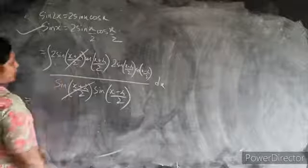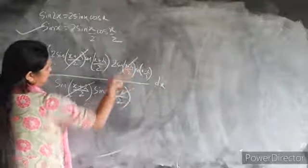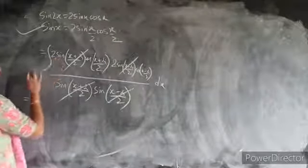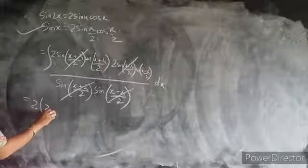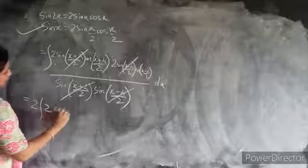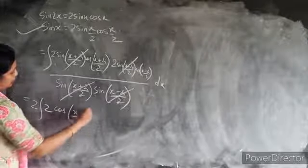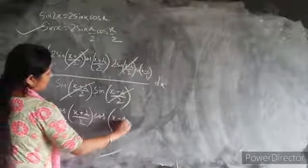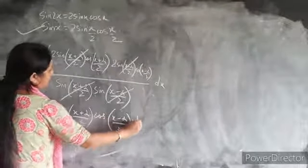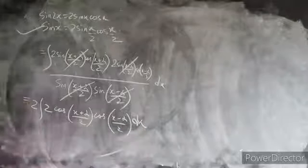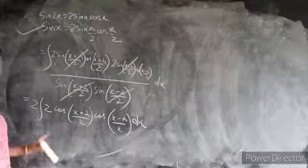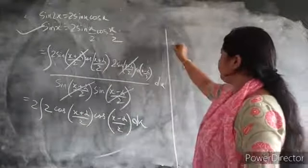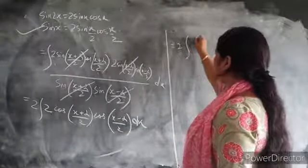This part and this part will cancel. So we are left with 2cos((x plus α)/2) times 2cos((x minus α)/2) dx. Now we need to apply the formula 2cosA cosB equals cos(A plus B) plus cos(A minus B).